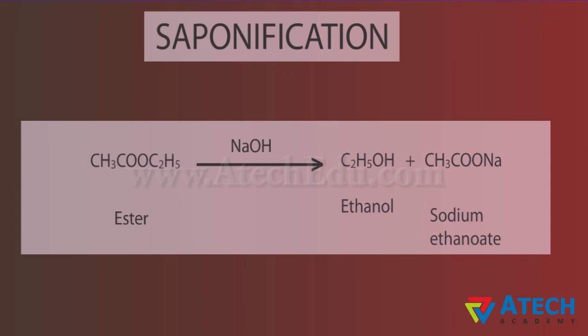For example, on treating with base sodium hydroxide, the ester is converted back to ethanol and sodium salt of carboxylic acid called sodium ethanoate. This reaction is known as saponification because it is used in the preparation of soap.